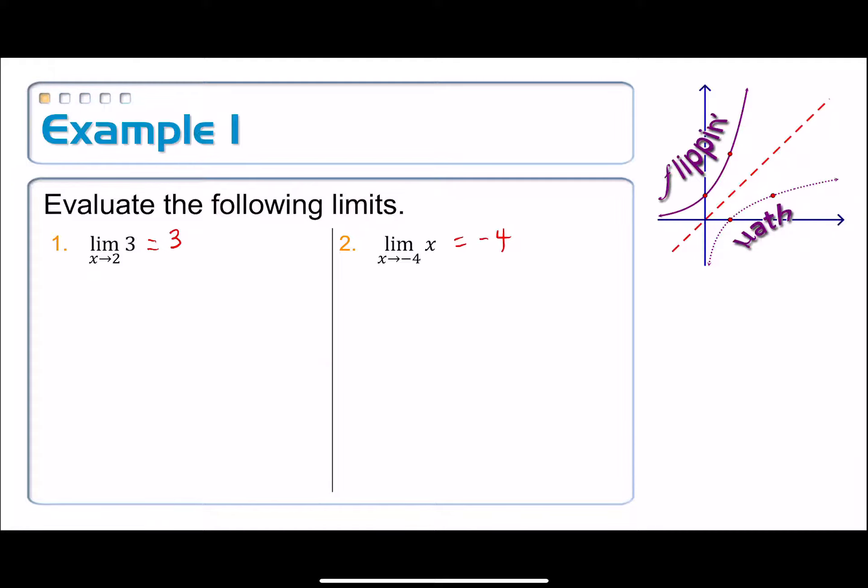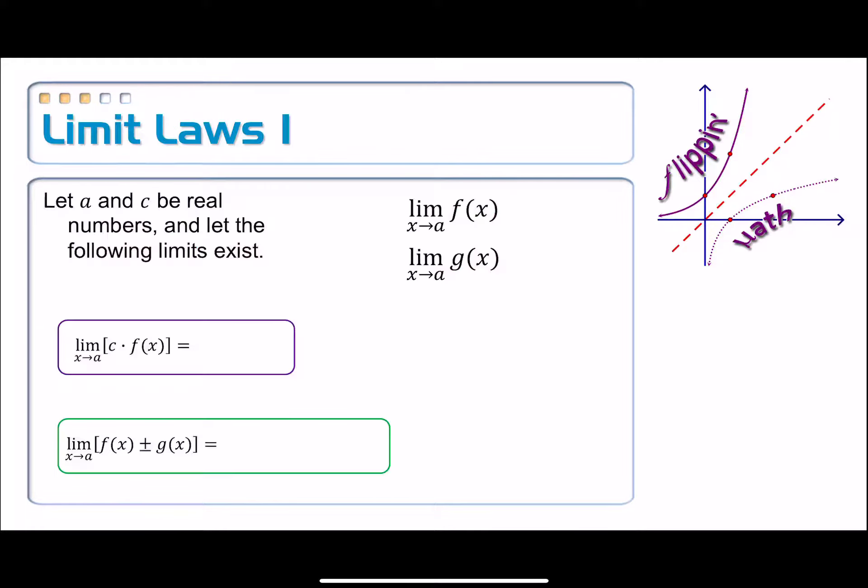All right, let's build some more complicated limit laws here. Here's going to be the first two. But first, let a and c be real numbers, and let the following limits exist. And by following limits, I mean these two on f and g specifically. And this part is super important. The limits have to exist. If limits do not exist, if one does not exist due to unbounded behavior, differing left-right behavior, or oscillation, none of these limit laws hold.